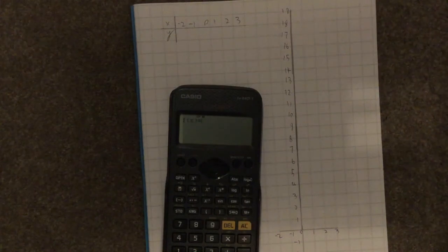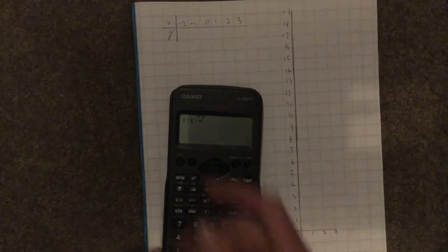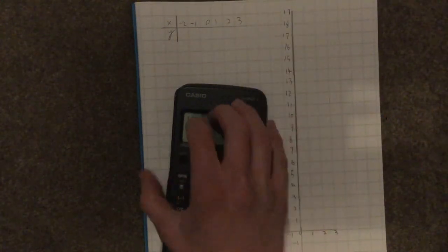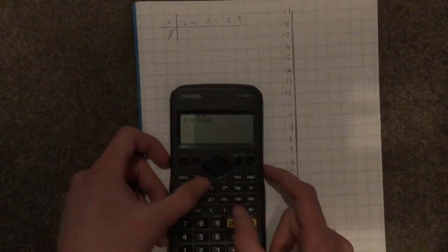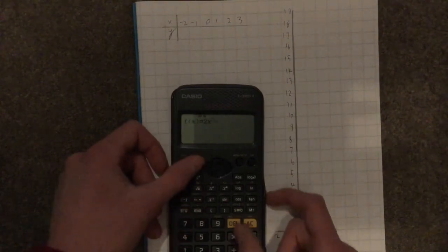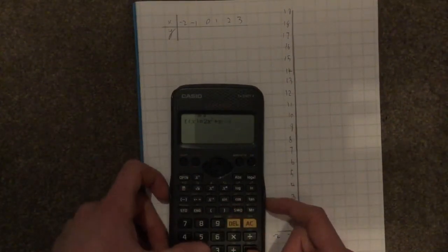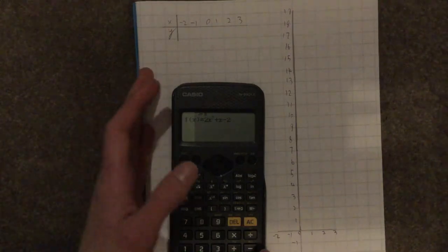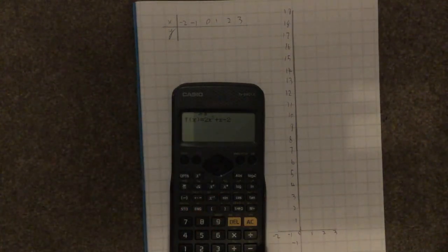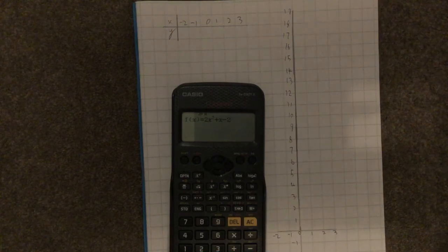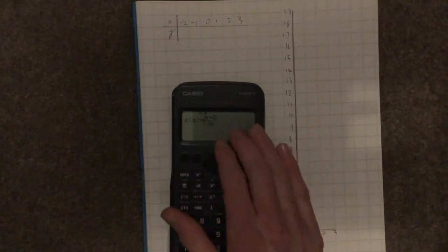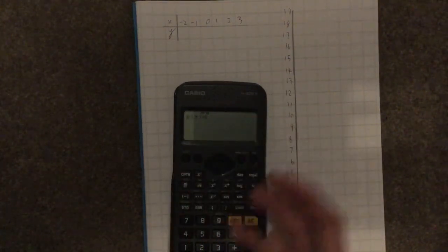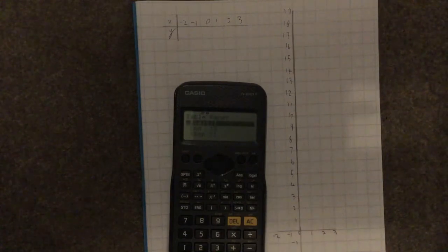The first thing we must do is enter that in. Press all clear to clear it, and then enter this in to this screen. So, we want 2x squared plus x subtract 2. And we don't enter in the y equals, we are just entering in the bit after the equal sign as we are calculating what y will equal. Then we press equals.